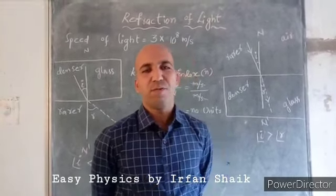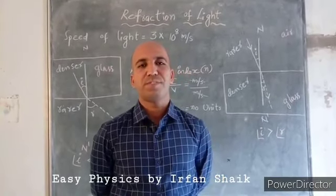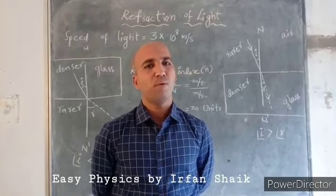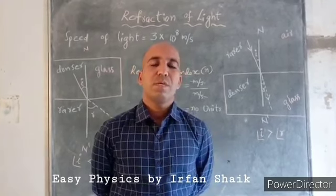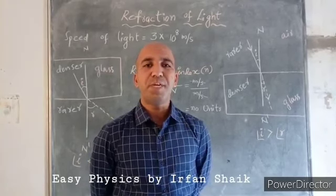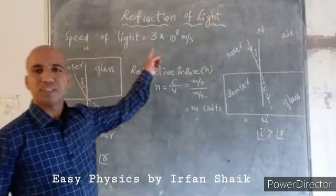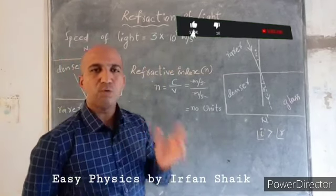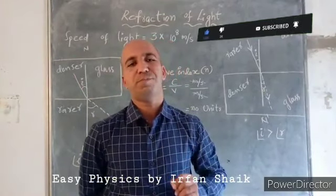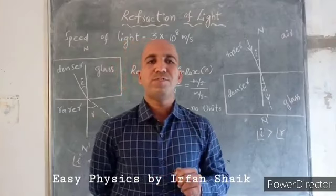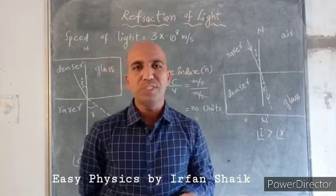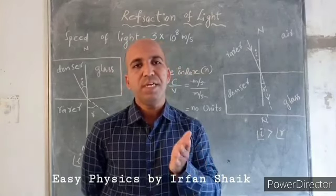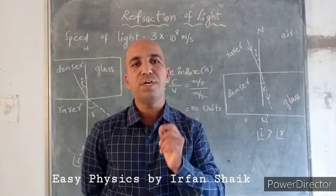Hi everyone, this is Irfan. We are going to discuss about refraction of light. When we observe this phenomenon, we try to understand this quality of light. Light travels from one medium to another medium. The speed of light in vacuum is 3 × 10⁸ meters per second, that means around 3 lakh kilometers per second. When the medium changes, the speed of light changes — that is why the light bends, changing its direction. This quality of light is called refraction.